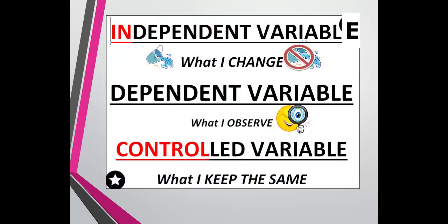A good way to remember these: the independent variable — I for independent — is what I change. Dependent is the measured or observed thing. And controlled has the word 'control' — it's what you keep the same or control in the experiment. I like to remember independent equals I, I change in the experiment.